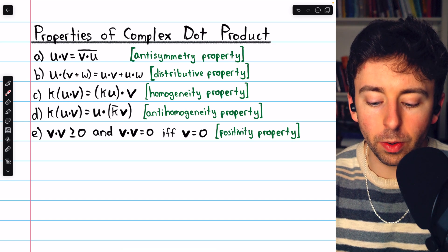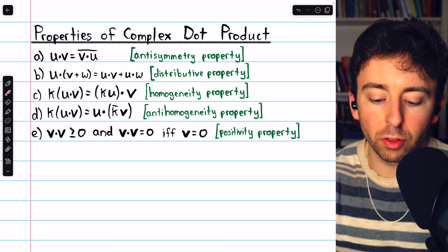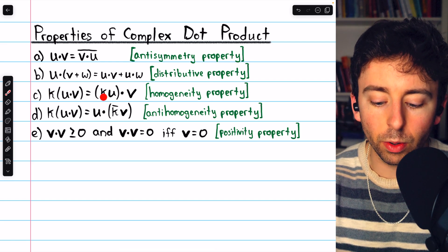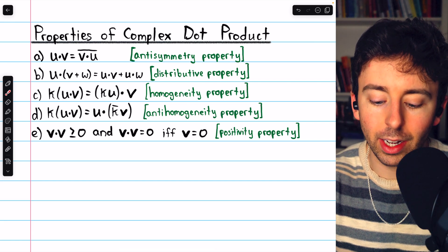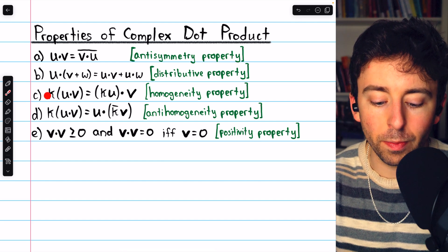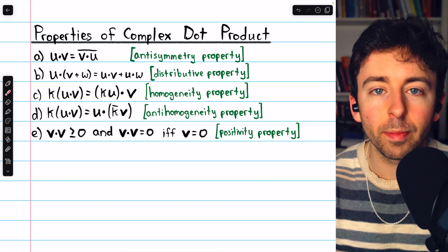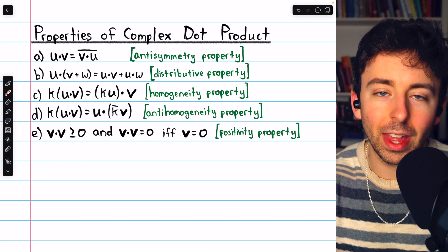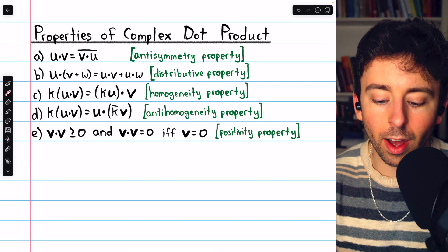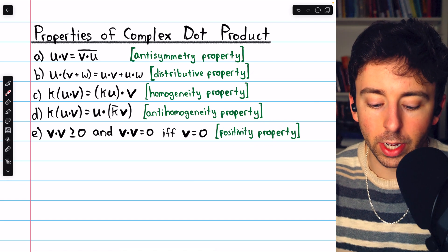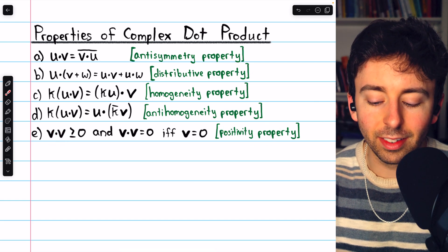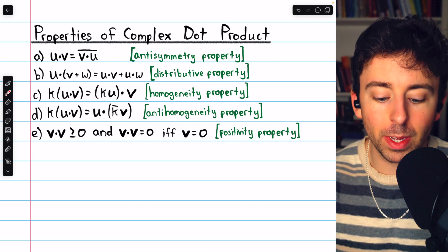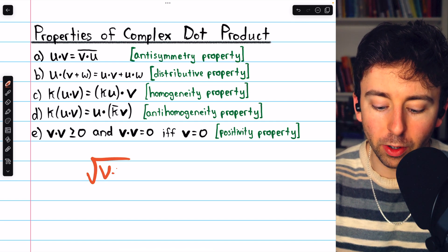Next, u dot (v plus w) equals u dot v plus u dot w — that's the familiar distributive property; the dot product distributes over vector addition. Then k times u dot v is the same as (ku) dot v — that's the homogeneity property. We also have the anti-homogeneity property: k times u dot v equals u dot (k-conjugate times v), so pairing the scalar with the second vector requires taking its conjugate to preserve equality. Finally, the positivity property states that the dot product of a complex vector with itself will be at least zero, and equals zero only when the vector is the zero vector — which is important since v dot v appears under the square root in our definition of the Euclidean norm.